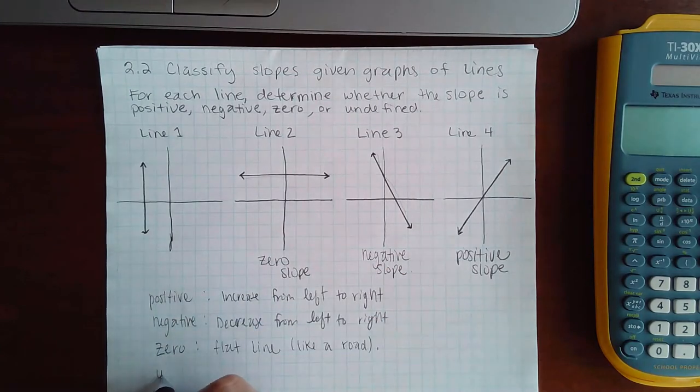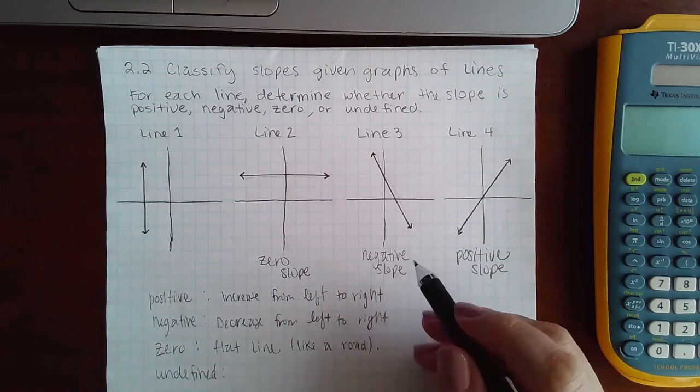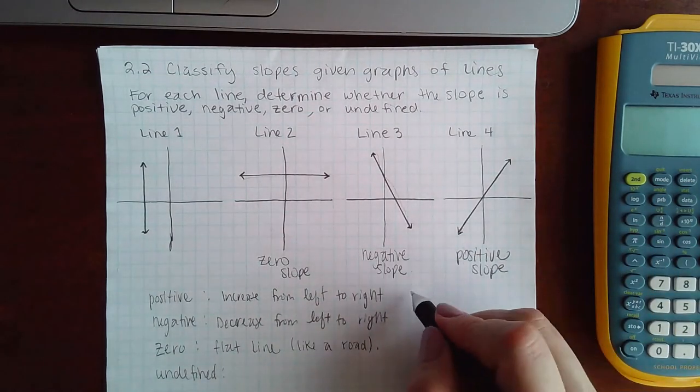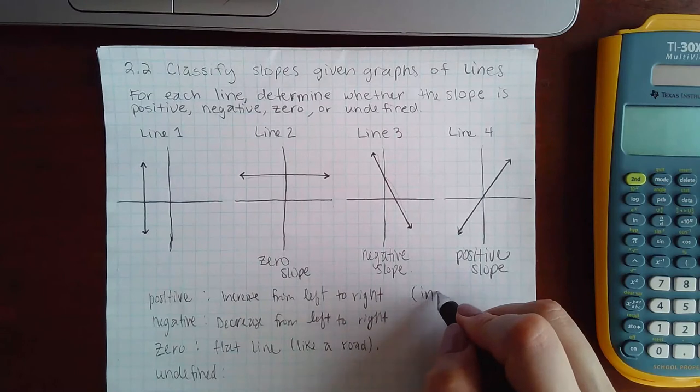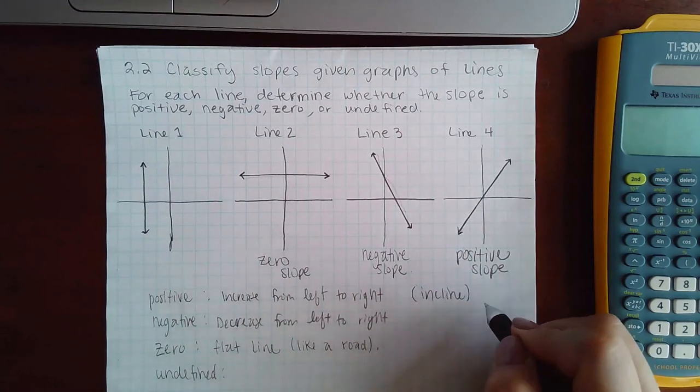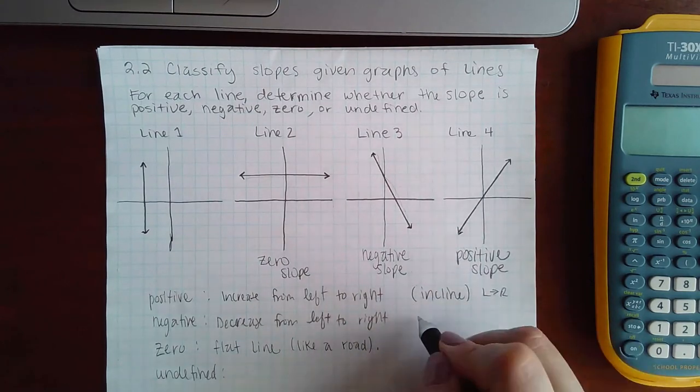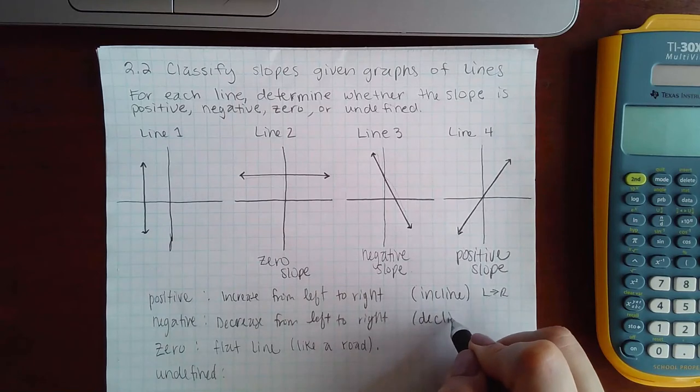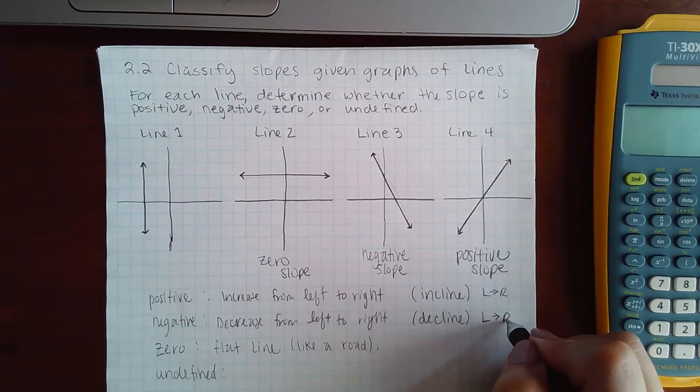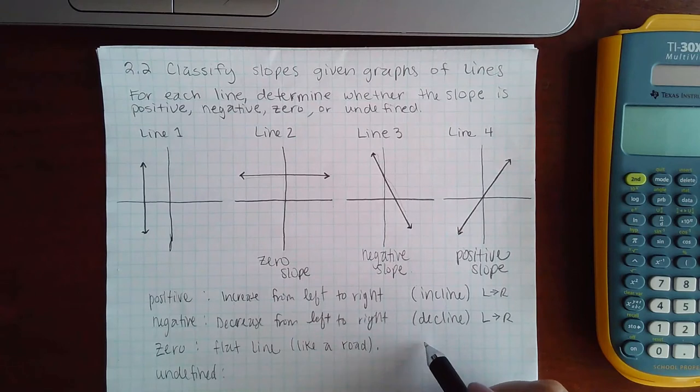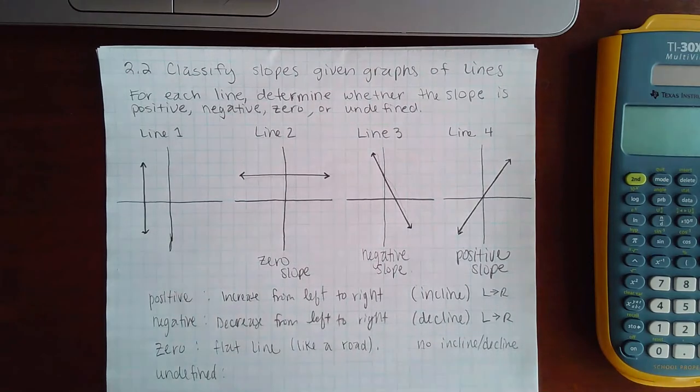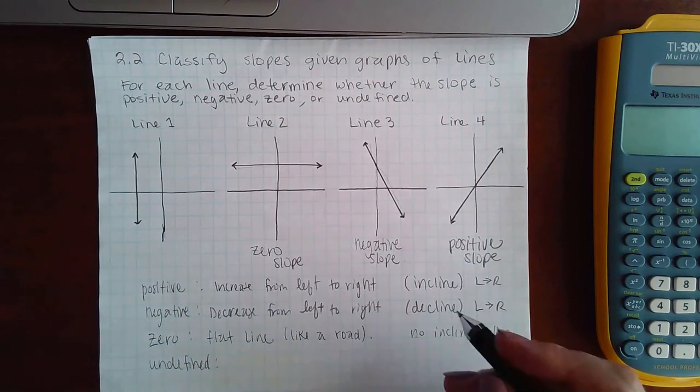And then an undefined slope. You can think of this one like as if you're walking. This one has an incline as you walk from left to right. This one has a decline that's much easier to walk along. And then this one has no incline or decline at all - it's just flat like a flat surface.